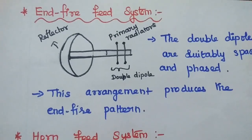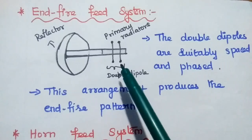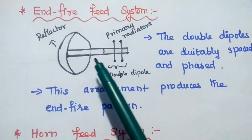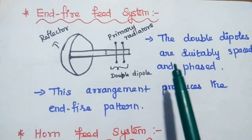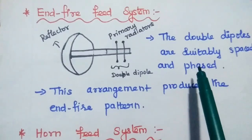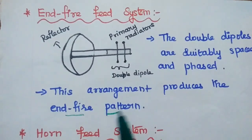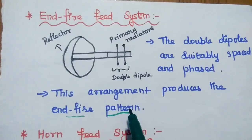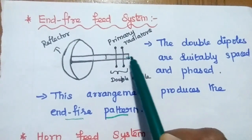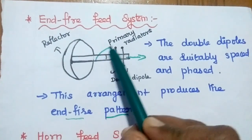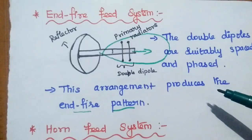The next one is the endfire feed system. In this system, we use two dipoles together at the end of the connecting line. There are two dipole antennas suitably spaced and phased. This arrangement produces an endfire pattern, which means maximum radiation is along the array axis. So the maximum radiation happens in the direction of this axis — this is called the endfire feed system.